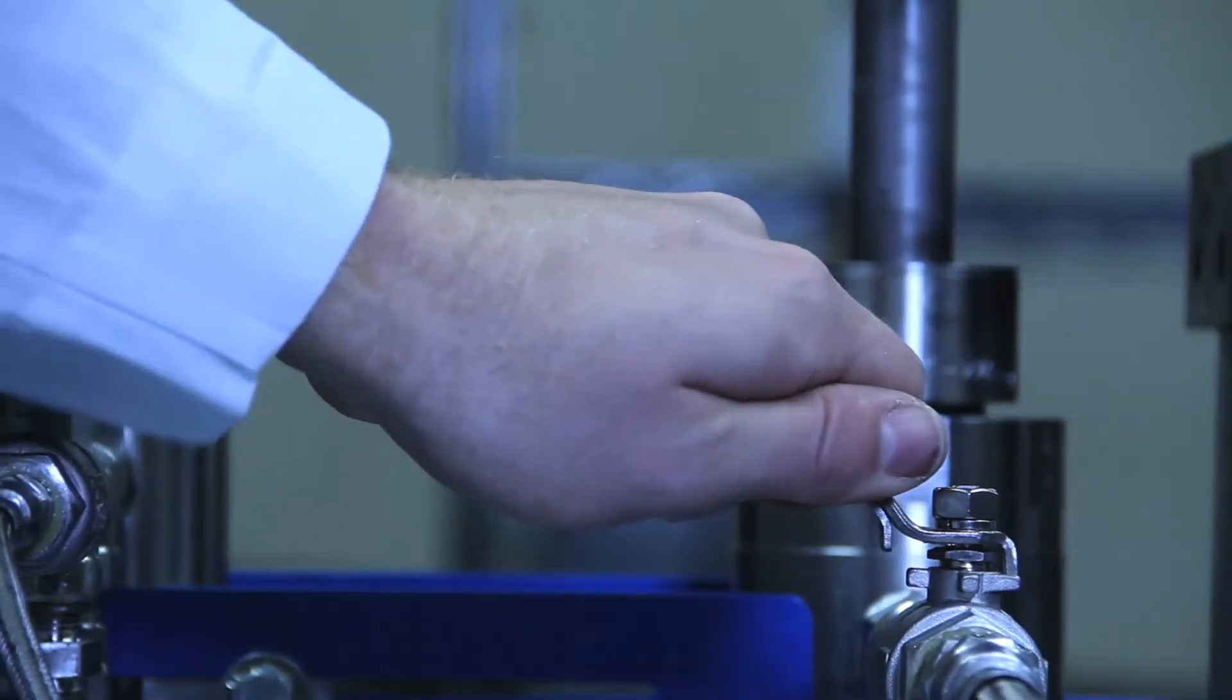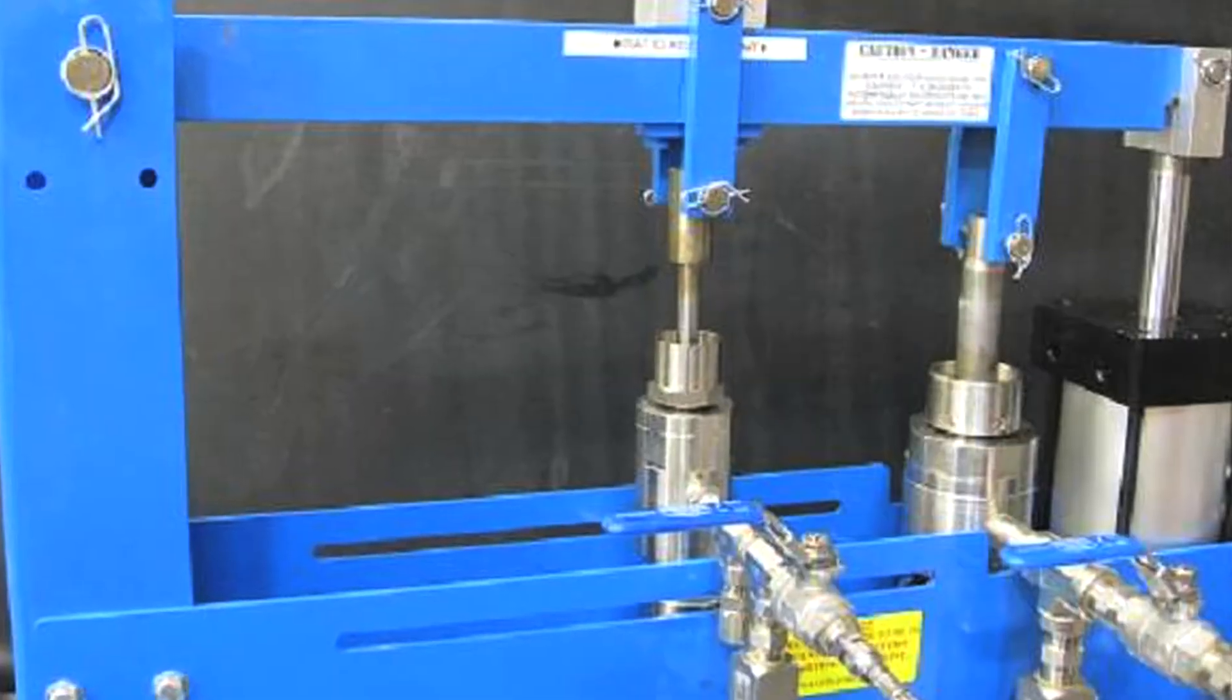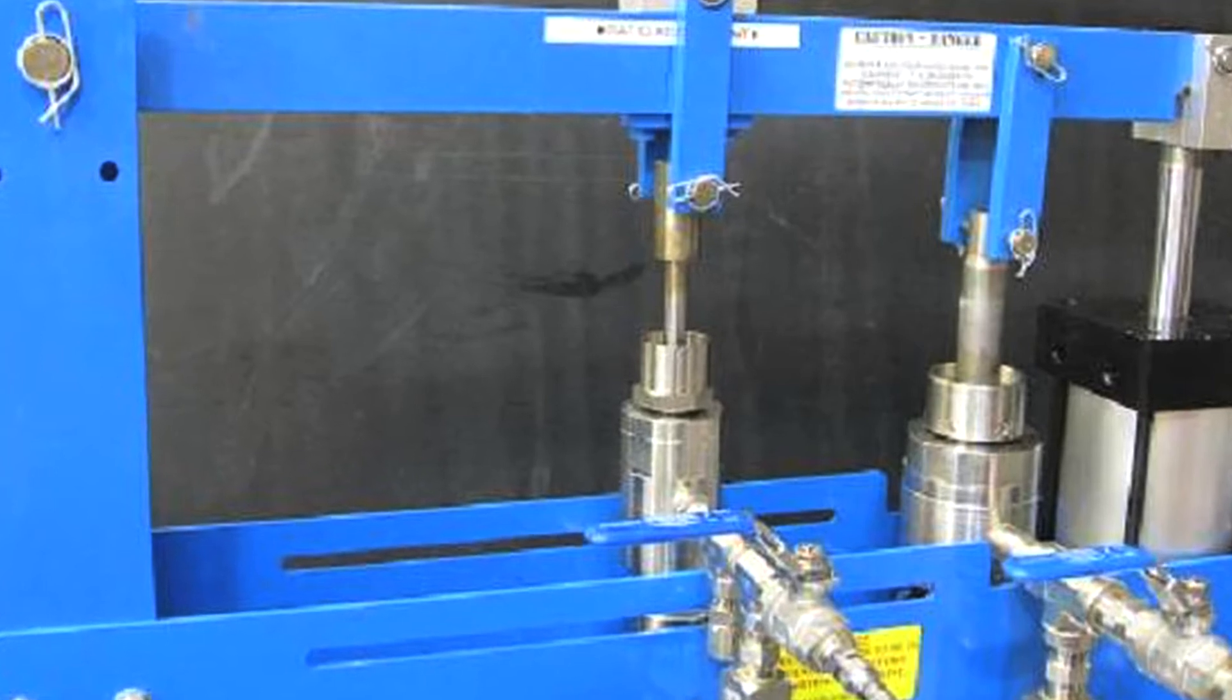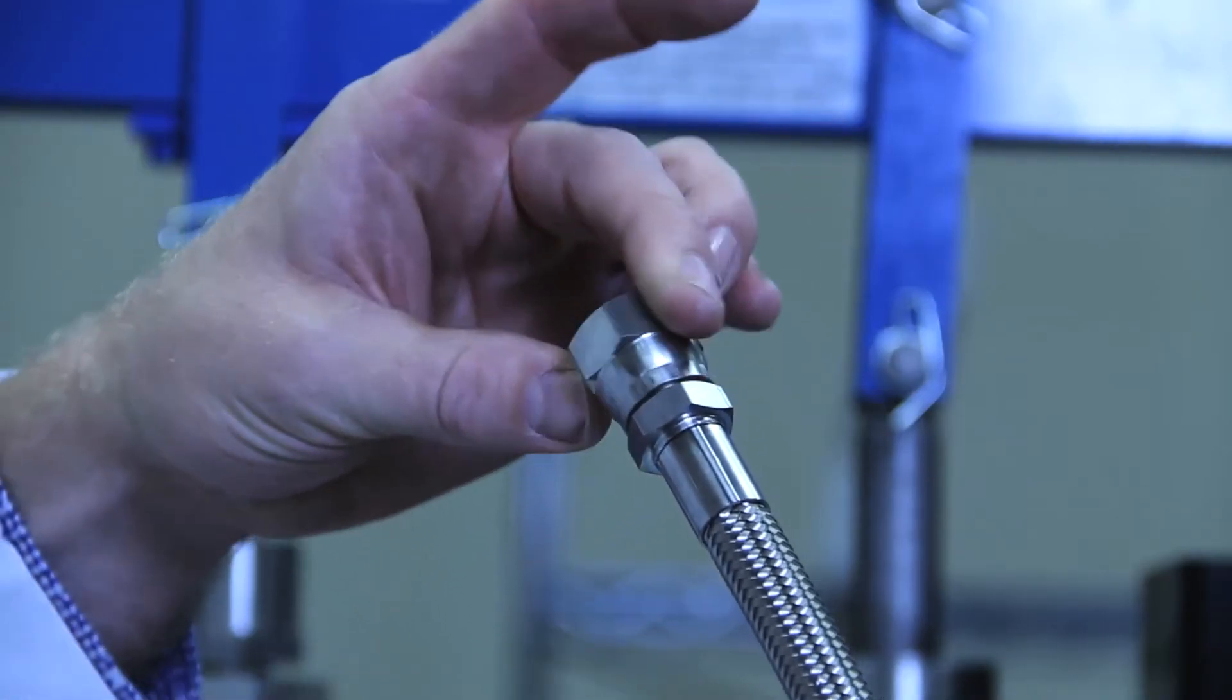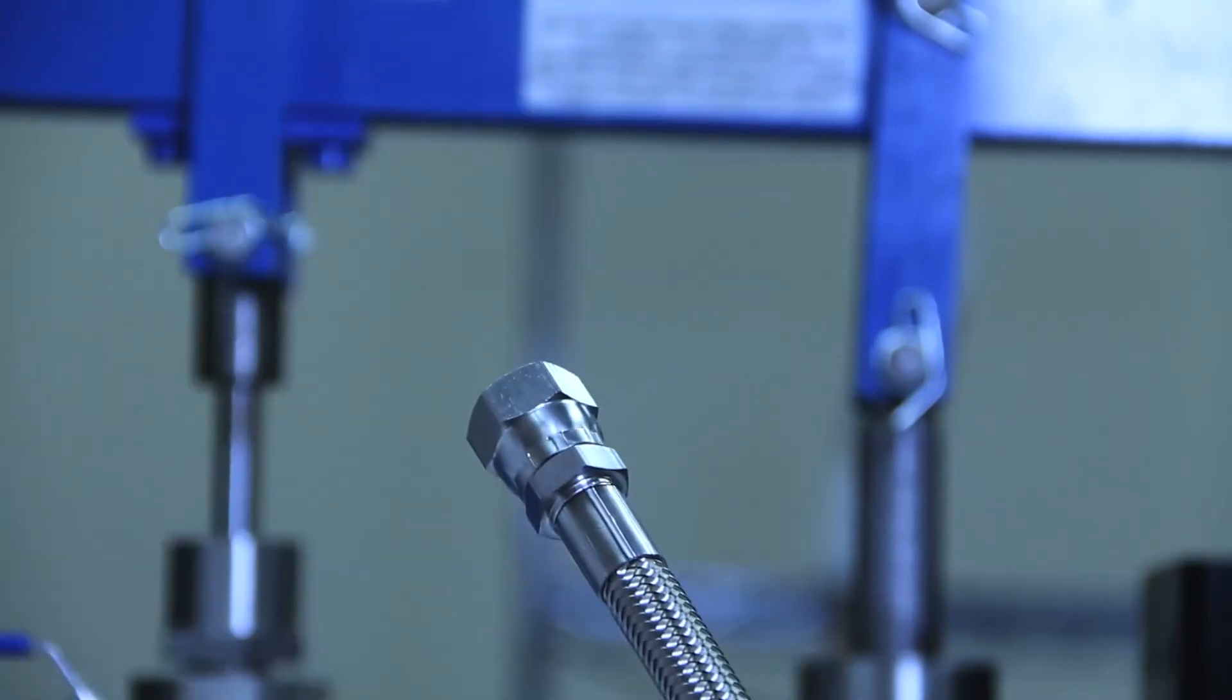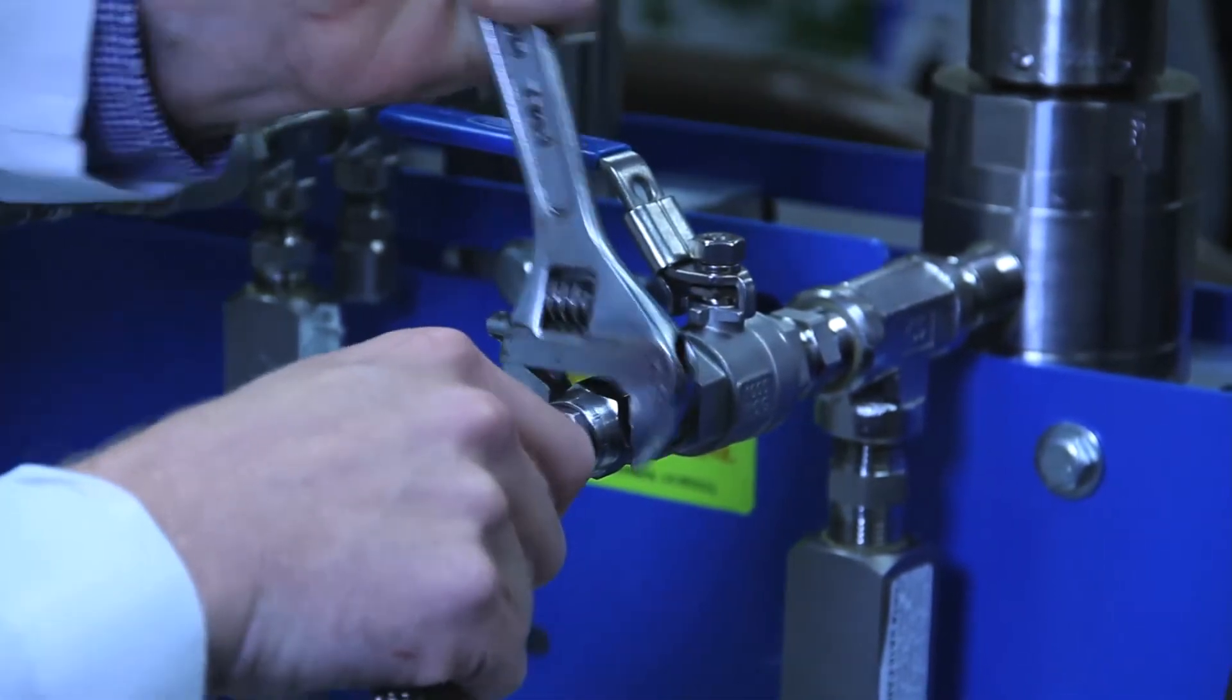Once both supply hoses are connected, confirm the valves are closed and begin the installation of the discharge hoses. Connect the resin hose to the discharge port on the pump closest to the air cylinder. This hose is a 1/2 inch Teflon stainless steel braided hose with swivel ends. Using a box end wrench, tighten the hose connection until snug. Do not over-tighten.